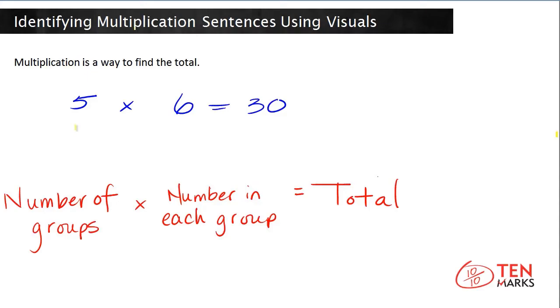What this means is if you know the number of groups and the number in each group, you can multiply the two numbers together to find the total.